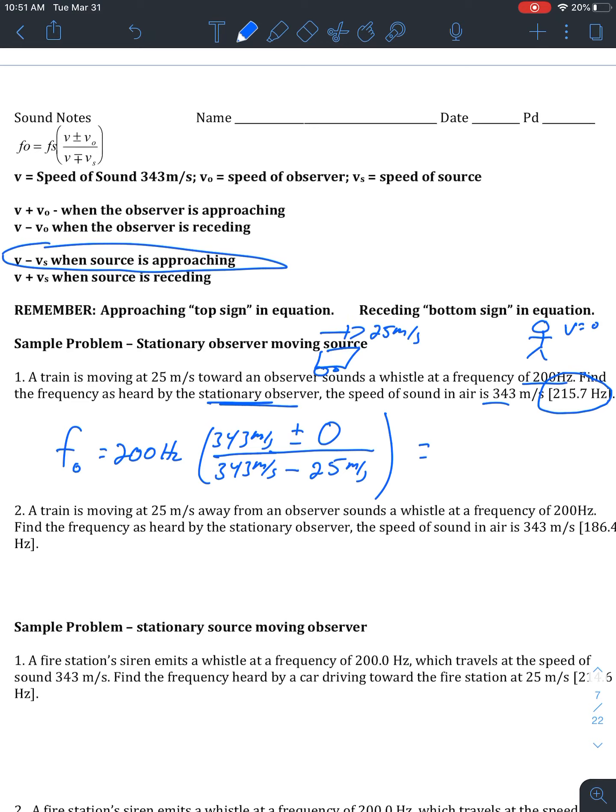So when we plug that all into a calculator, we should get an observed frequency of about 215.7 hertz. And one thing to note is making sure you know how to use your calculator. In this case, not that big of a deal because we've got the zero up top. But making sure you are plugging things in according to the correct order of operations. That's another biggest issue there.